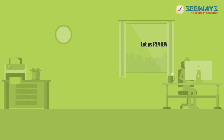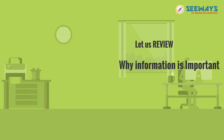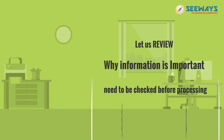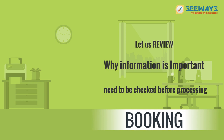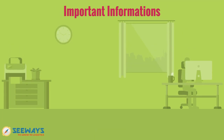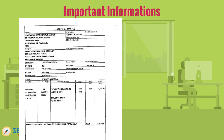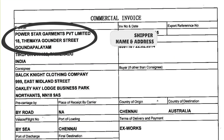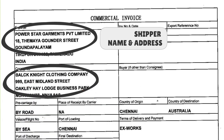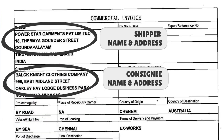Now let us review why each information is important and needs to be checked before processing the booking. First, shipper name and address. Next, consignee name and address.